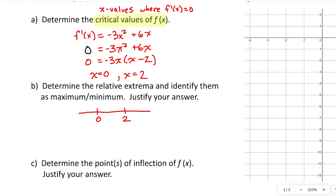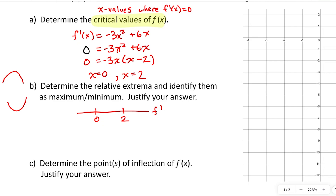Label the critical values on the number line — those will be the partitions. Choose a representative value from each interval and plug it into f prime to find out whether f prime is positive or negative. If the sign changes from positive to negative, the slope of f goes from positive to negative, meaning there's a relative maximum. If it goes from negative to positive, we have a local minimum.